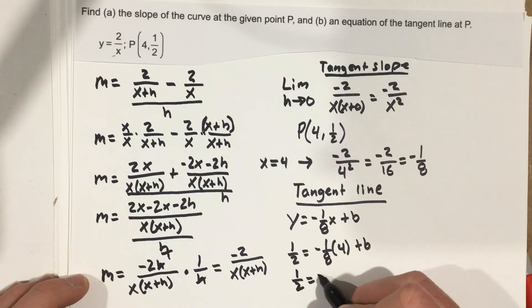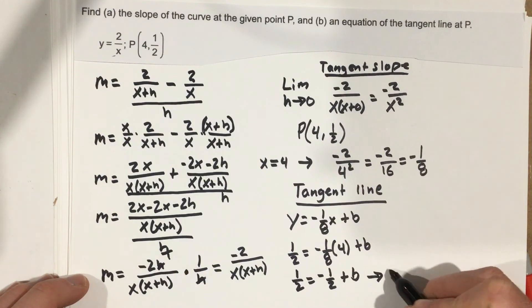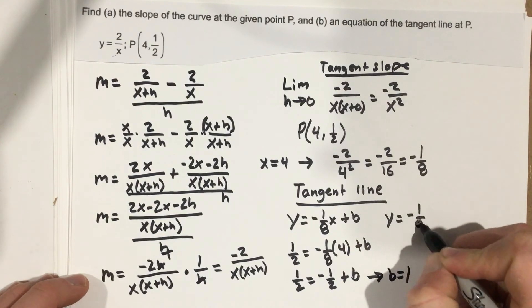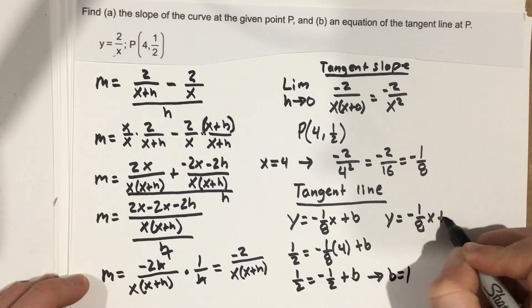This is negative 4/8 or negative 1/2. So I get 1/2 equals negative 1/2 plus b. When I add this over, I get b equals 1. So I get an equation which is y equals negative 1/8 x plus 1.